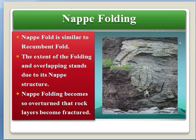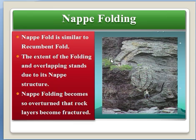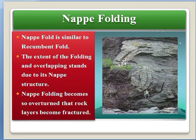Nappe folding is similar to a recumbent fold. The extent of folding and overlapping strands due to its nappe structure — nappe folding becomes so overturned that rock layers become fractured. As I said in the previous slide, a nappe fold is similar to a recumbent fold. When it is overturned, it becomes a recumbent fold. Due to the overturning, the rock is highly fractured in this zone.